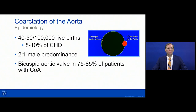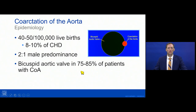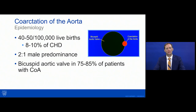The epidemiology of coarctation is that it affects about 40 to 50 live births out of 100,000, involved in about 8 to 10 percent of congenital heart disease. Males are affected more frequently than females, and its association with bicuspid aortic valve is well understood — about 75 percent of patients with coarctation will have a bicuspid aortic valve. The reverse is not true; bicuspid valve is much more common than coarctation.